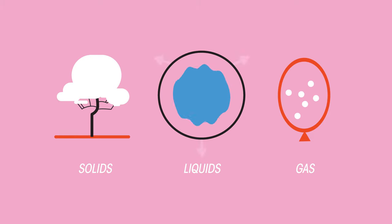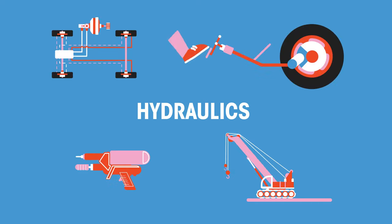We can use liquids to transmit pressure out equally in all directions. Technology using moving liquids is known as hydraulics, which is where the water pistols, cranes and car brakes come into play. They all use hydraulics.